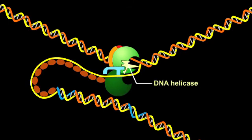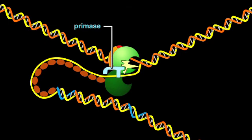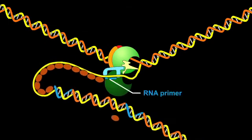As the DNA helicase continues to unwind the parental DNA, the primase becomes activated and synthesizes a short RNA primer on the growing lagging strand.